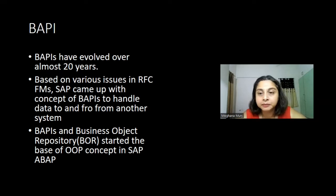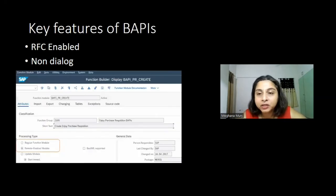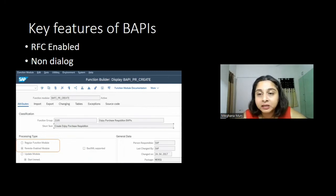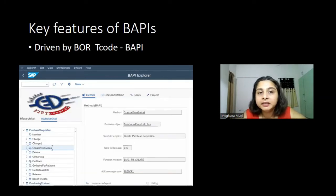The key features of BAPI are: first, a BAPI is a function module. If you go to SE37 and open any standard BAPI, it will be marked as RFC-enabled in the attributes tab, and it will be a no-dialogue function module — which means there will be no error message thrown or screen pop-up that comes when you call any BAPI.